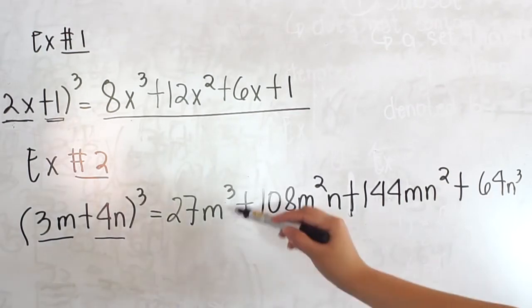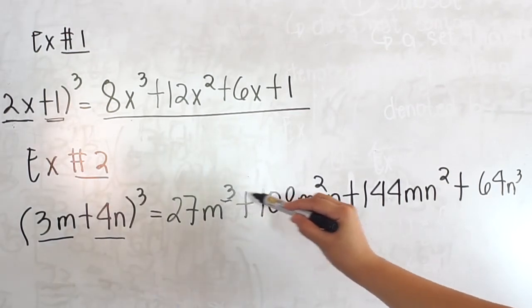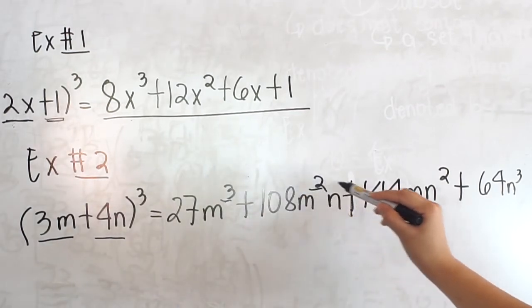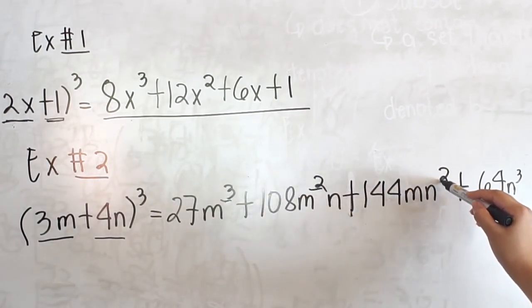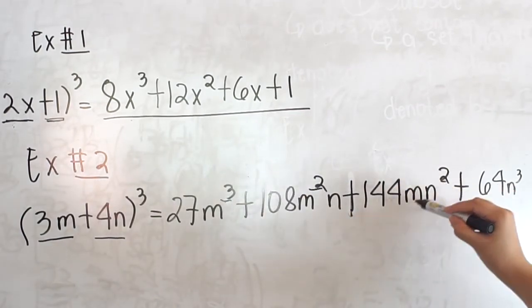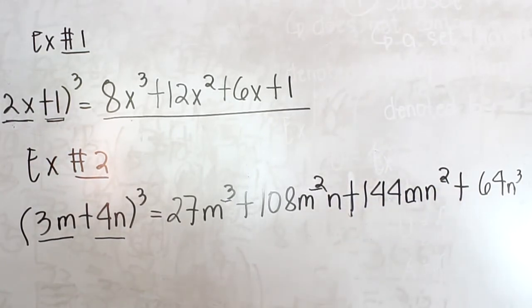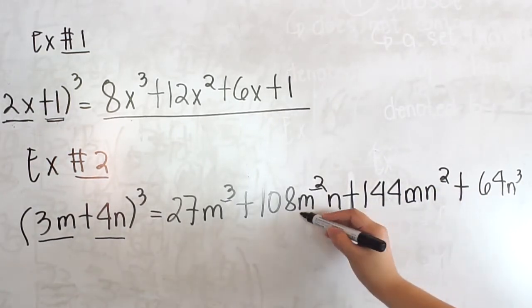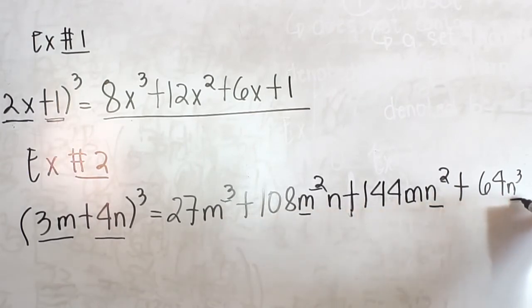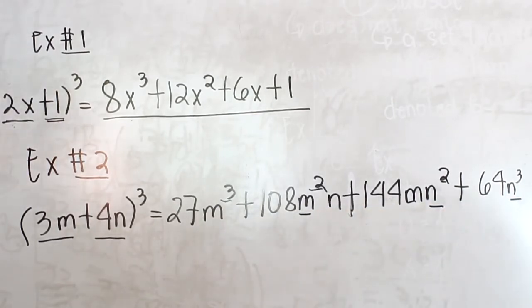Notice that the exponent of the first variable is in decreasing form, and the exponent of the second variable is in increasing form.